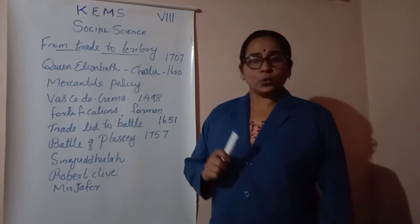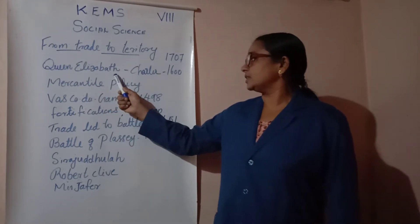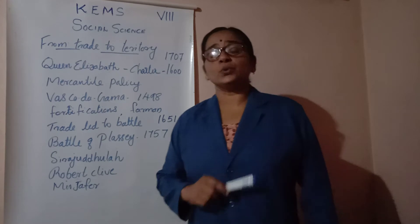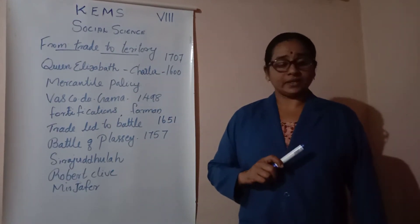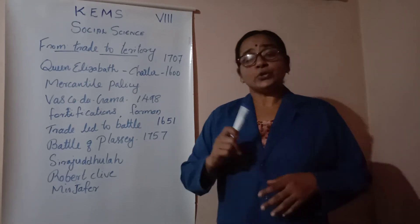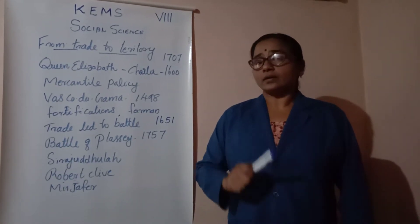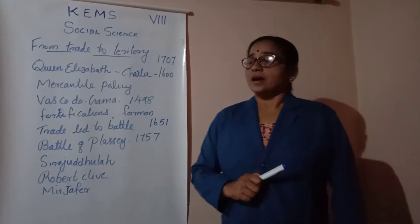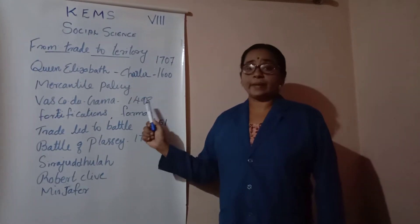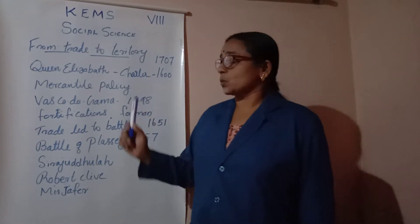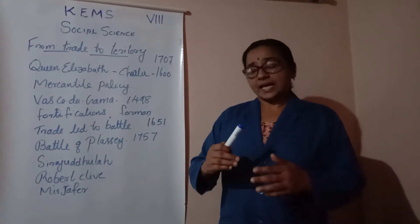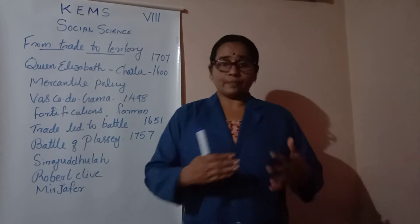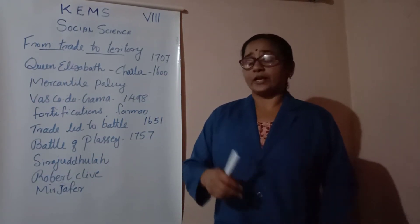In 1600, the English East India Company acquired a charter from Queen Elizabeth. As per this charter, they were granted the sole right to trade with the East. No other trading groups could compete with the English East India Company. Only the English East India Company had the supreme power to trade with India. They bought things at cheap prices and carried them back to Europe, selling them at higher prices, earning a huge profit.